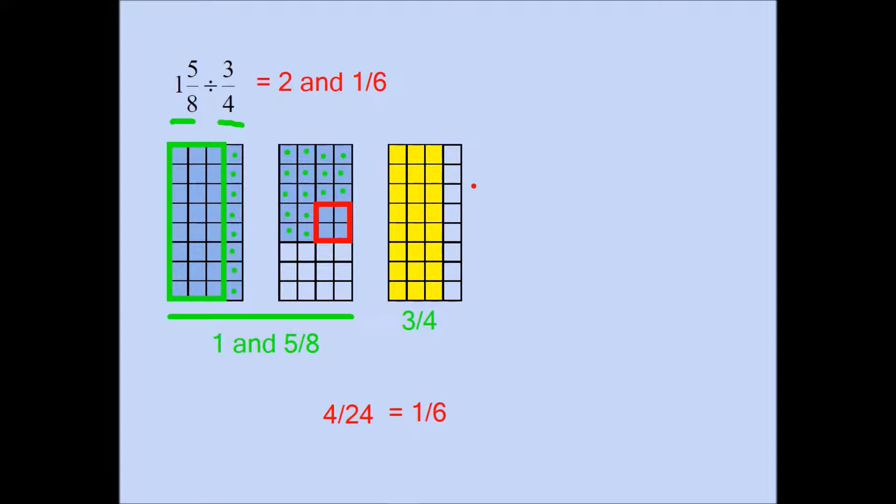So my final answer is 2 and 1 sixth. We are concluding that the yellow rectangle will fit into the blue pieces one whole time, two times with the dots, and 1 sixth of a time. So altogether my final answer is 2 and 1 sixth.